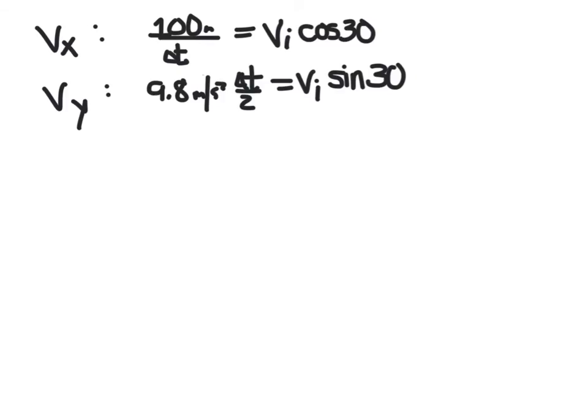Here are the two equations again. From Vx, physics was distance over time, 100 over T. From the trig, it was Vi cosine 30. Vy, we had 9.8 T over 2, and from trig, Vi sine 30. So, we have two equations, one from the x direction, one from the y, and we have two unknowns. We don't know Vi, and we don't know T. So, we need to solve an equation. Let's solve this one for Vi, and then we'll put that into Vi here into this equation.